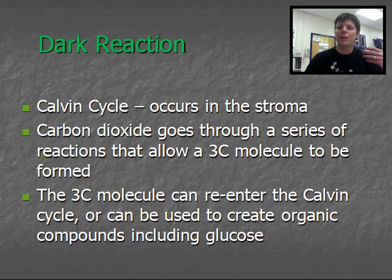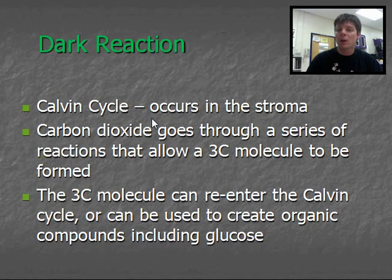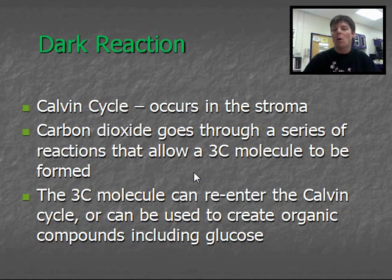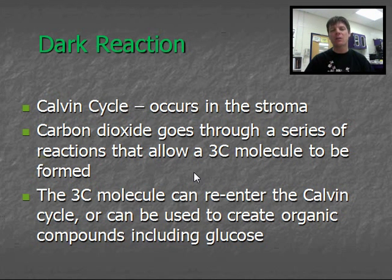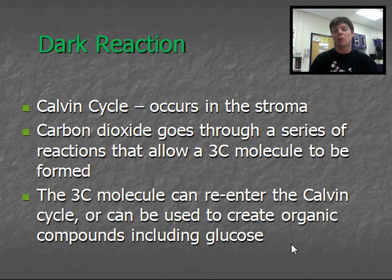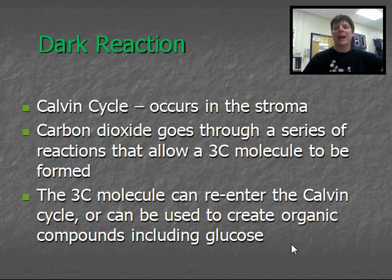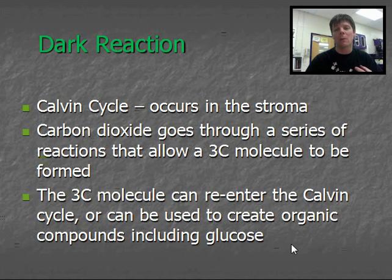The other part of photosynthesis you need to know about is called the dark reaction — very often called the Calvin cycle in textbooks. This is a process occurring in the stroma, the fluid on the inside of a chloroplast. Carbon dioxide goes through a series of different chemical reactions, each catalyzed by a different enzyme, which generates molecules containing three atoms of carbon. These three-carbon molecules can reenter the Calvin cycle, be used to create glucose, and also be used to create other organic compounds. Here we're taking carbon from the atmosphere in the form of CO2 — an inorganic form of carbon — and converting it into organic forms, which are the basis for building all of the molecules we find in cells.